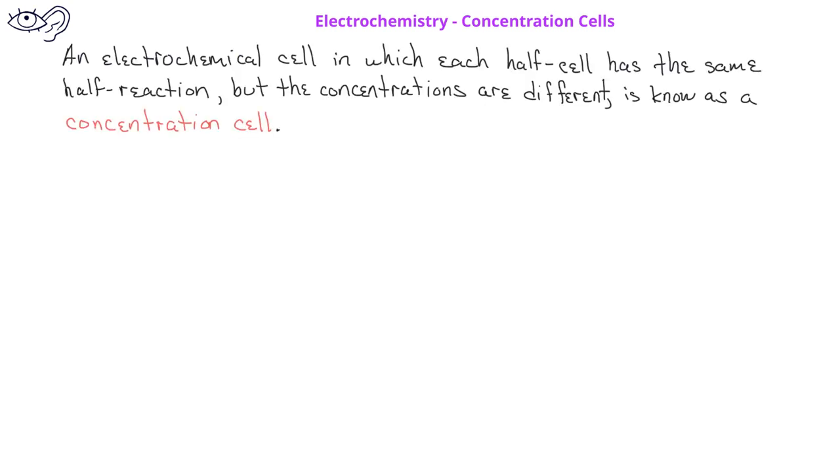What this means is that we can construct an electrochemical cell out of half cells with the same half reactions, but that they differ in the concentration of the reactants or products. This is known as a concentration cell.